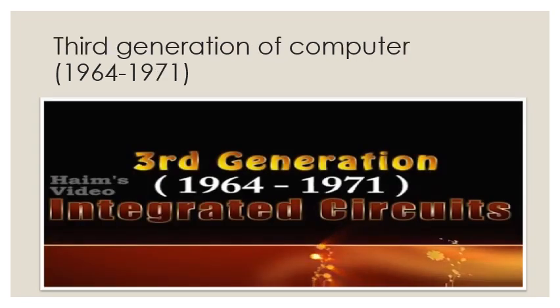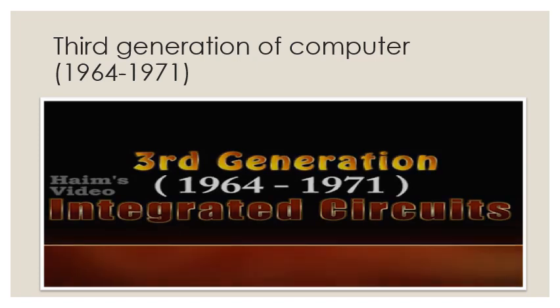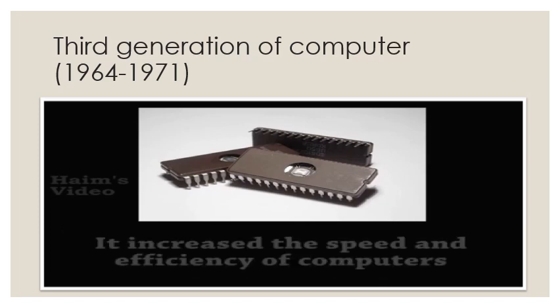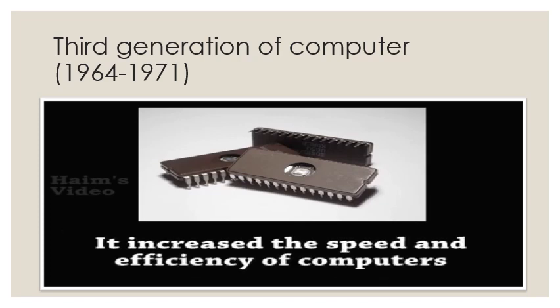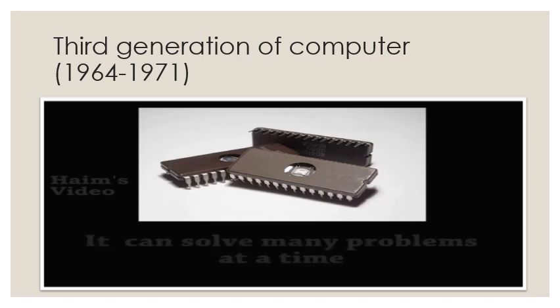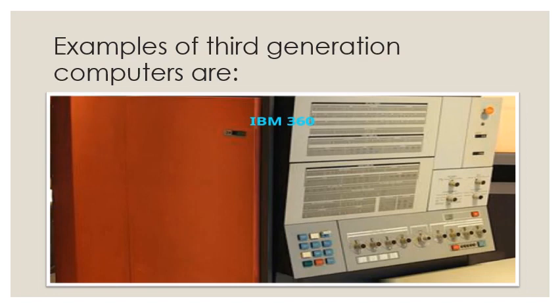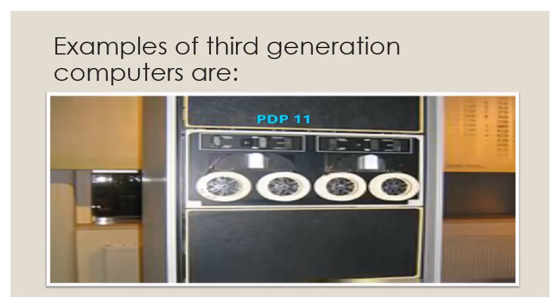The third generation of computer was from 1964 to 1971, and its main component was integrated circuits. Transistors were made smaller in size and placed on silicon chips, which increased the speed and efficiency of computers. Third generation computers could solve many problems at a time.